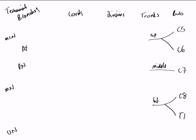With C7, we don't have a convergence; it just continues distally as the middle trunk. So from these five ventral rami — these five roots — we then have three trunks. Each of these trunks is then going to give off both an anterior and a posterior division.